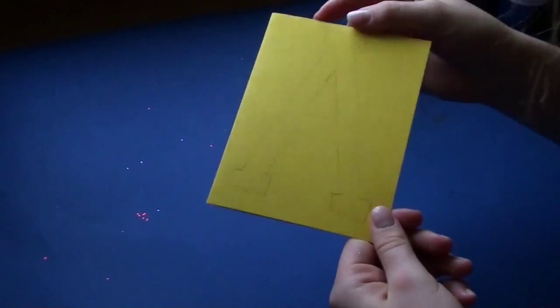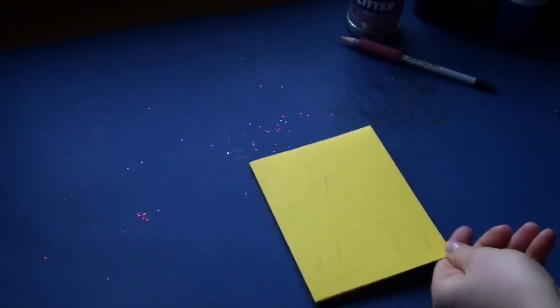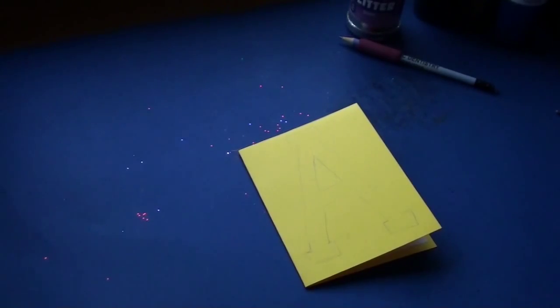Here I have my letter A. Now take your white glue and trace over the pencil marks.